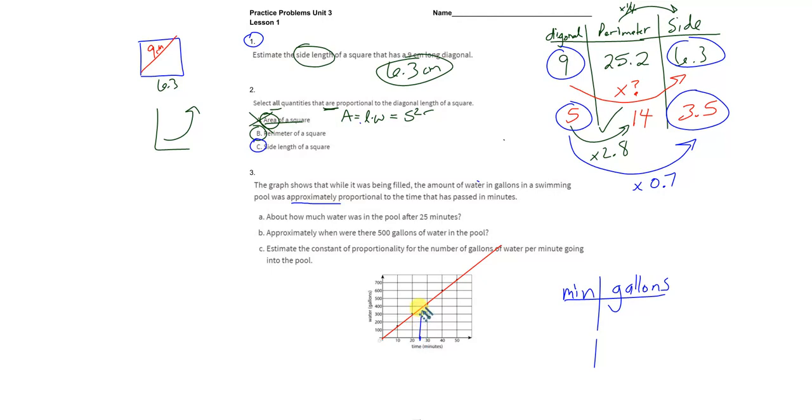I go straight up, I stop when it crosses, and then I go straight over. And it looks about a little under 400, probably about 375-ish, somewhere around there.